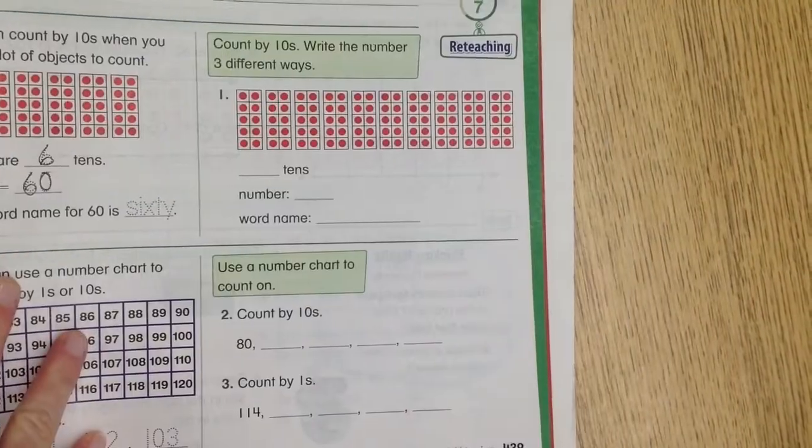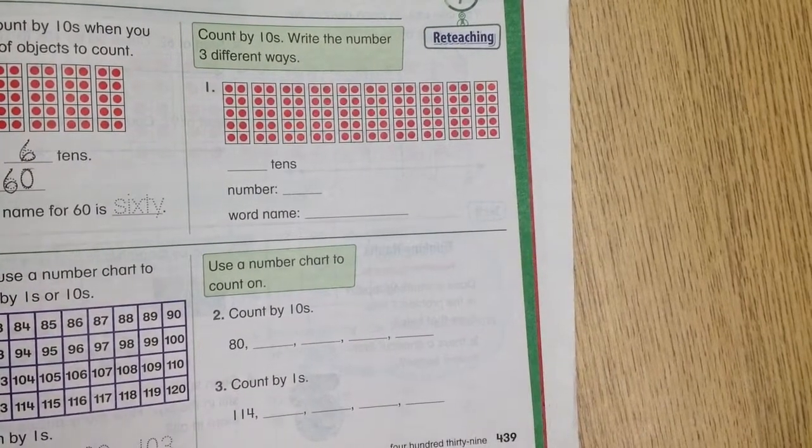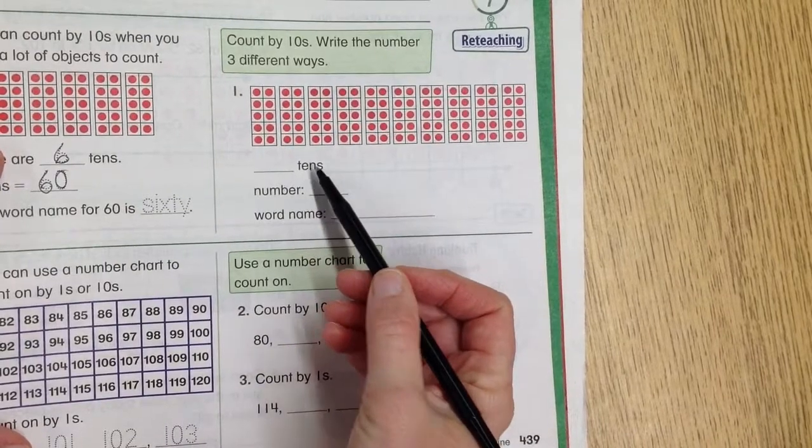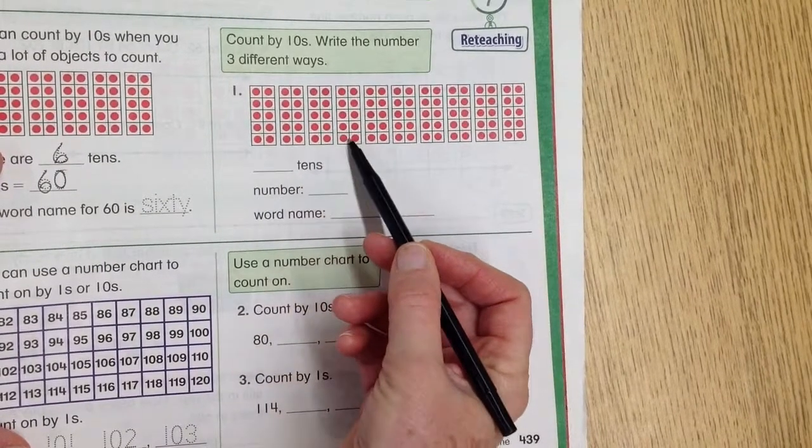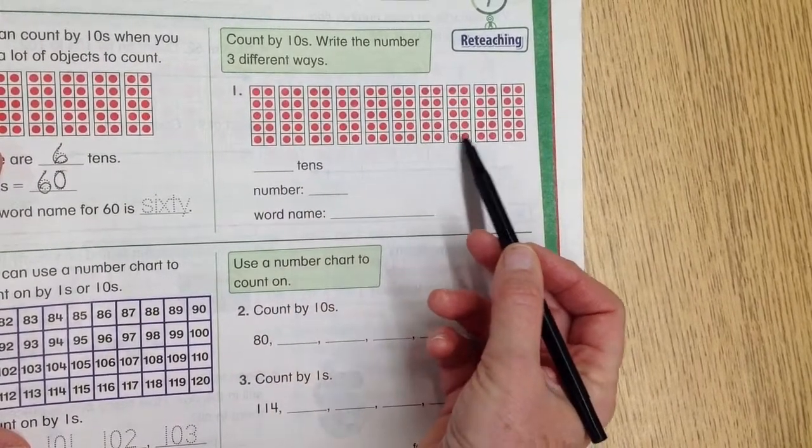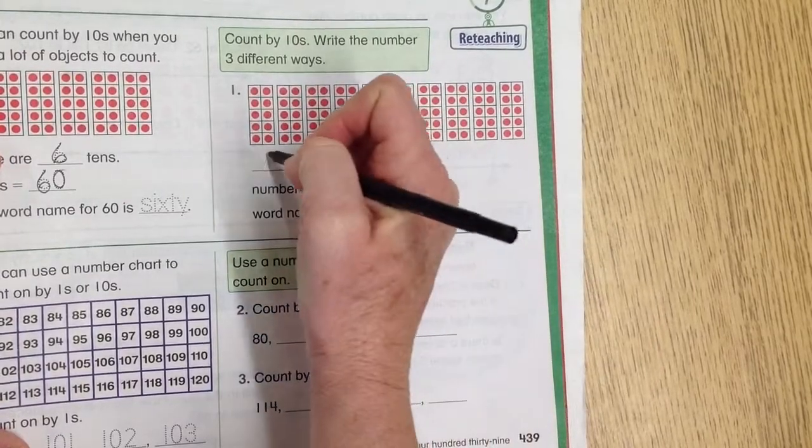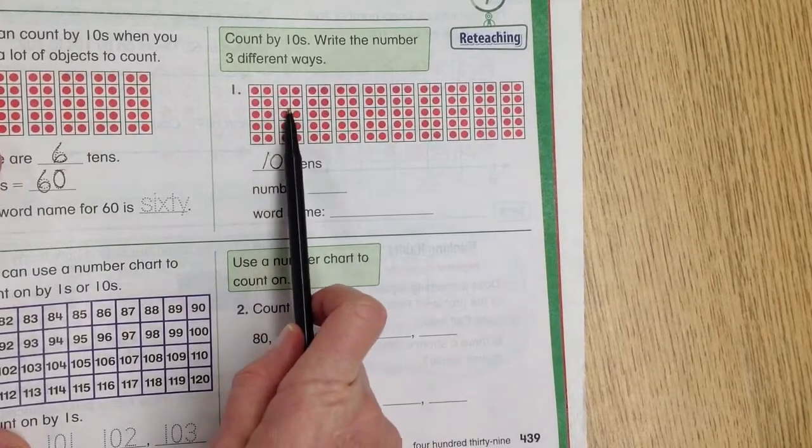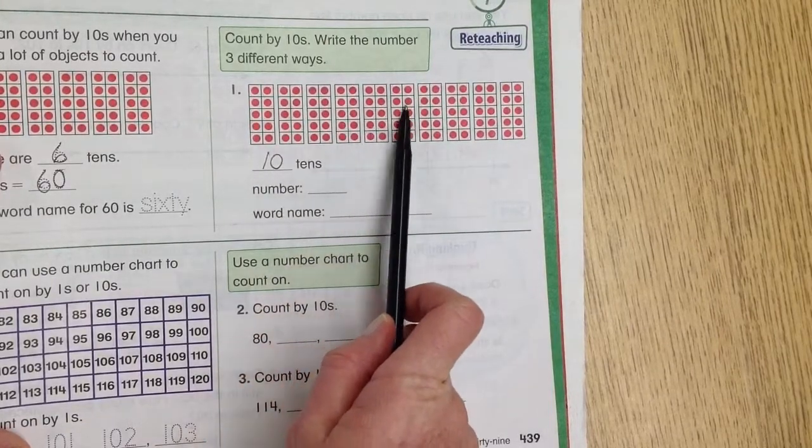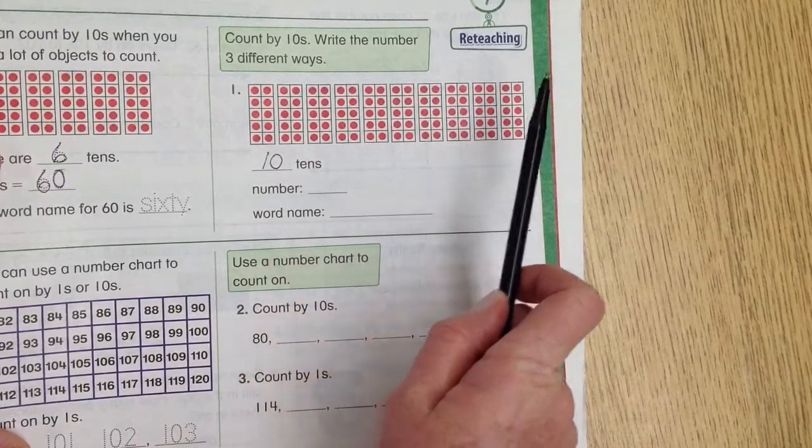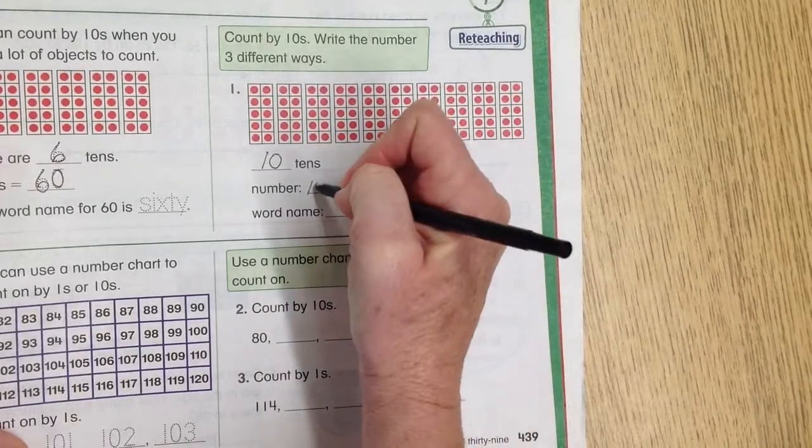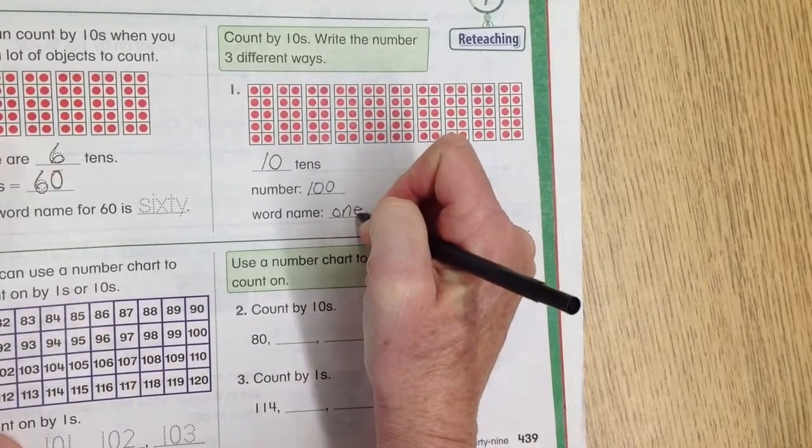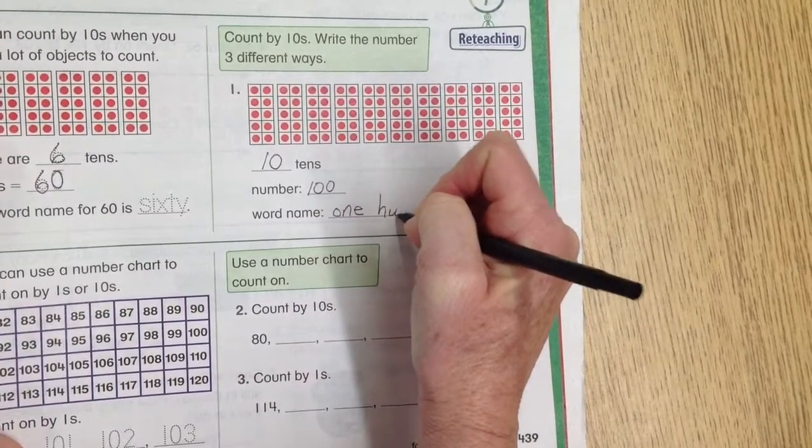So at number 1, it says count by tens and write the number three different ways. First I want to say how many tens we have: 1, 2, 3, 4, 5, 6, 7, 8, 9, 10. We have ten tens, and that number would be 10, 20, 30, 40, 50, 60, 70, 80, 90, 100. And then the word name would be where we actually spell it out, one hundred.